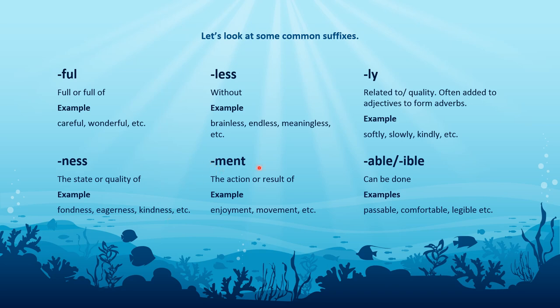The next suffix is -ment, meaning the action or result of, with examples enjoyment and movement. And lastly, -able or -ible, which both mean can be done. For example, possible — can be passed — and legible, which means that something can be read. So if you know what the suffix means and you know what the root word means, you are often able to guess or predict what the meaning of that word is going to be.